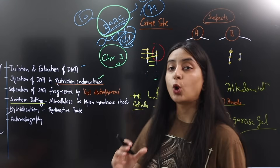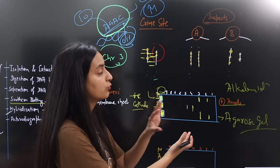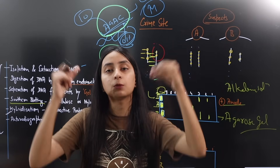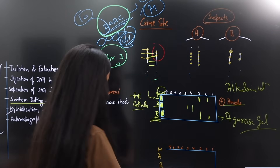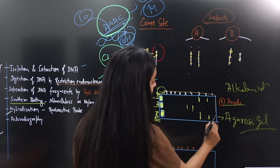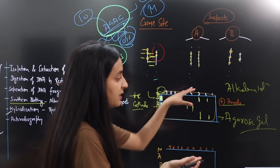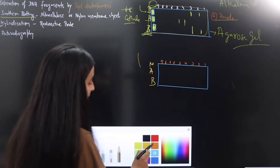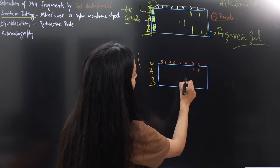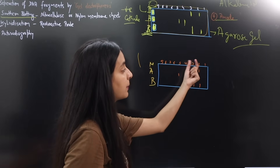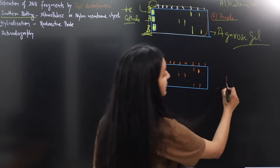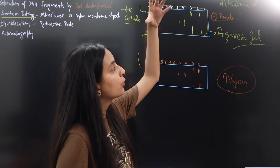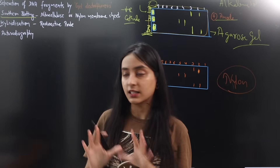The fourth step is Southern Blotting. We place a nylon membrane sheet — or nitrocellulose paper — on top of the gel electrophoresis plate. This paper absorbs all the DNA fragments from the gel. The fragments at positions 2, 3, 4, and 5 are absorbed onto this nylon membrane sheet. The process of transferring DNA fragments from the gel electrophoresis plate to the nylon membrane sheet is known as Southern Blotting.